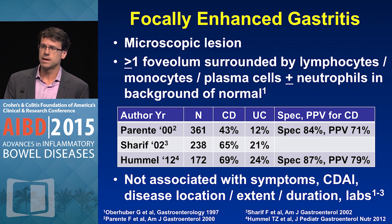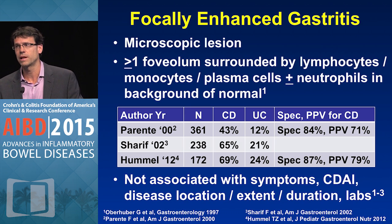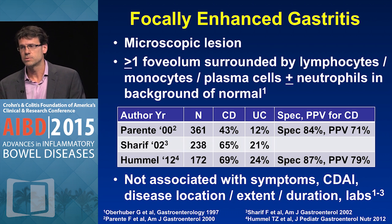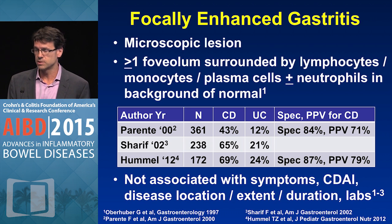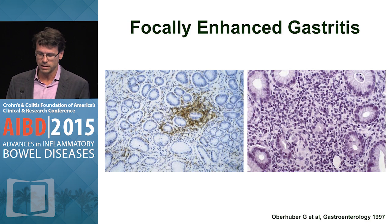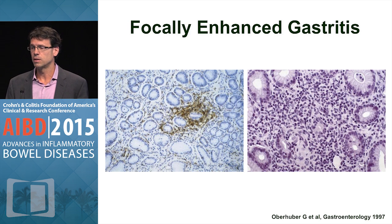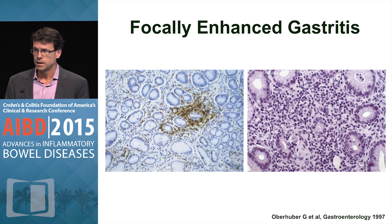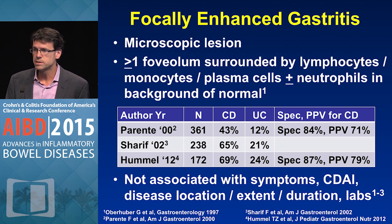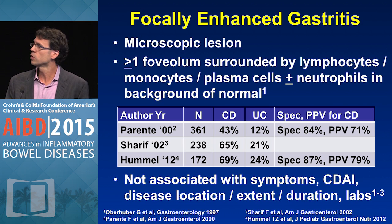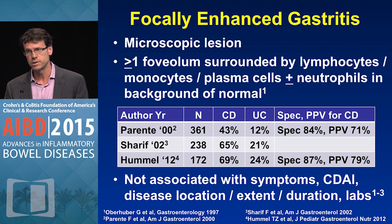There's a more recently recognized entity called focally enhanced gastritis, which is classically a microscopic lesion defined as having one or more foveola surrounded by mostly chronic inflammatory cells in a background of normal mucosa. On the left is a low-power view of a lymphocyte stain showing the focality of the lesion, and on the right is a high-power view showing these chronic inflammatory infiltrates. In the three largest series examining this, although more common in Crohn's than in UC, it occurs in potentially up to 25 percent of patients with ulcerative colitis, thus not being able to reliably differentiate one disease from the other.